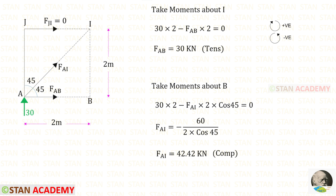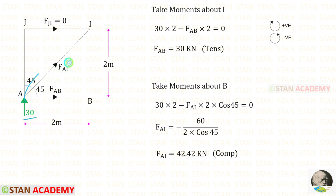Now let us take moment about B. When we take moment about B, we should not consider FAB. The remaining forces are 30 and FAI. 30 is acting in the clockwise direction so it is positive with a distance of 2.